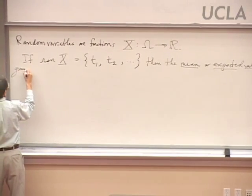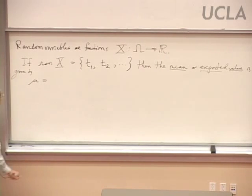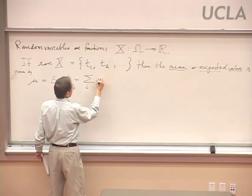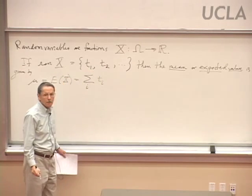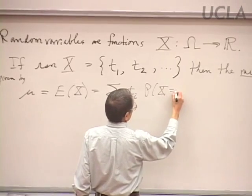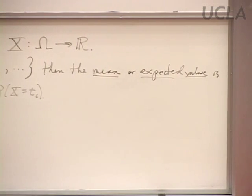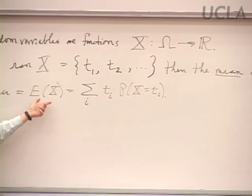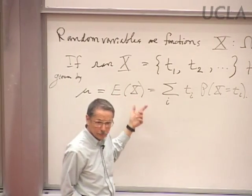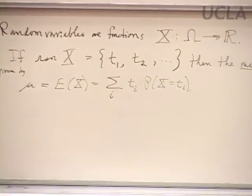The mean is given by this equation. If we're calling it the expected value, we'll often write it as E of x. It's a weighted average: we take all the numbers that the measurement could be, but each one weighted by the appropriate probability. The idea is that if we do the experiment a lot of times, we expect the average measurement we get from the different runs of the experiment to be somewhere around the mean or the expected value.